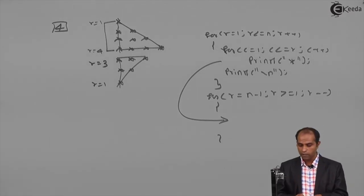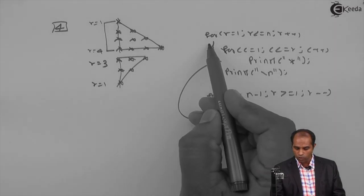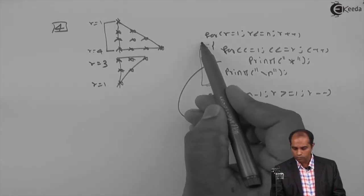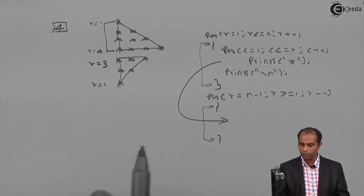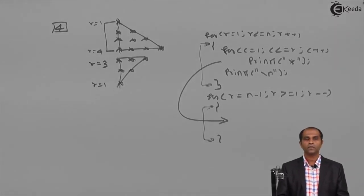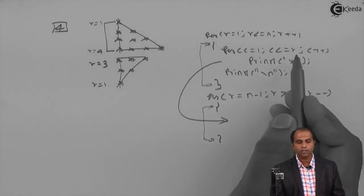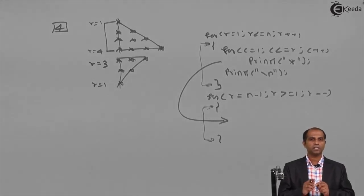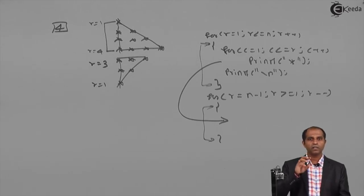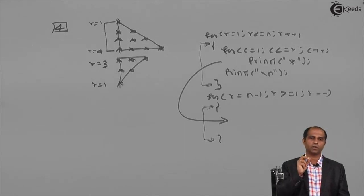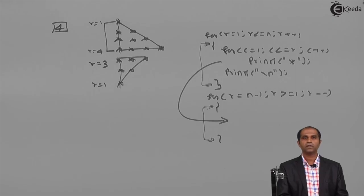Note the curly brackets carefully — they are only for the R loop. The C loop has no curly brackets because there is only one instruction inside it; if there is only one instruction, curly brackets are not needed. To summarize: for inversion, R goes from N to 1. For a merged vertically mirrored pattern, write the program twice — 1 to N, then N minus 1 to 1.